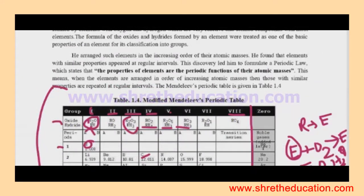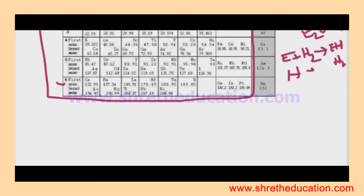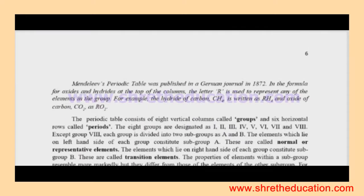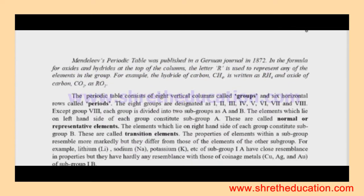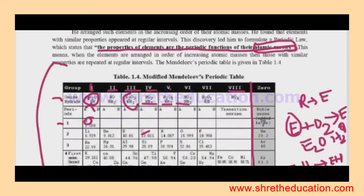The properties of elements are periodic functions of atomic masses. Mendeleev classified the elements into groups A, B, C. Any group contains subgroups. Subgroup A elements are representative elements.